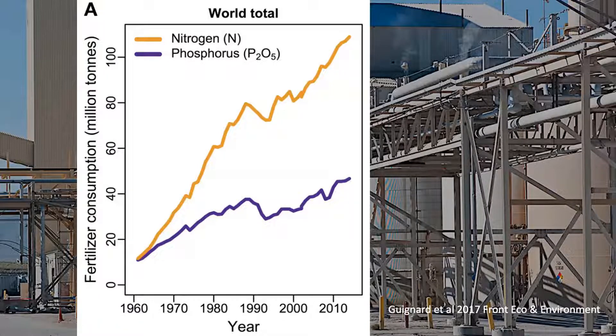Because of the Haber-Bosch process, ammonium, nitrate, and urea used in agriculture are among the highest volume chemicals currently made on Earth by humans. The Haber-Bosch process is also extremely energy intensive — it breaks apart unreactive nitrogen in the atmosphere and combines those nitrogens with hydrogen. It consumes about 5% of the world's annual natural gas production, which is just astounding. And that use of energy brings me to carbon.